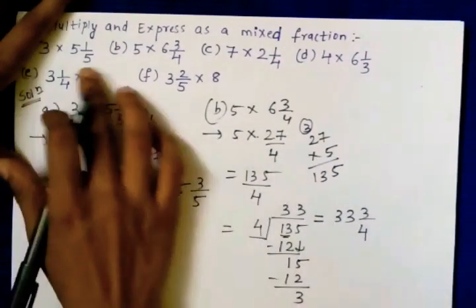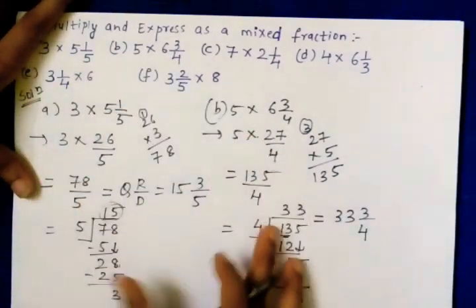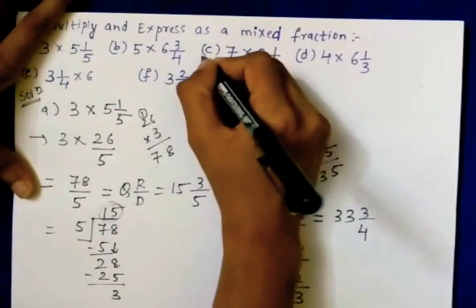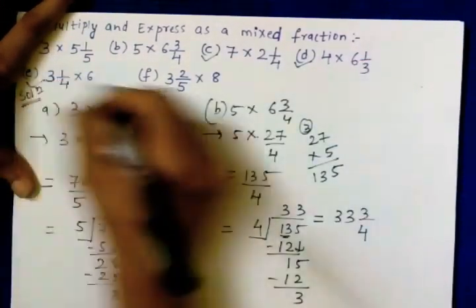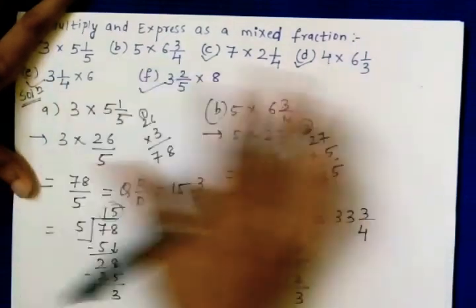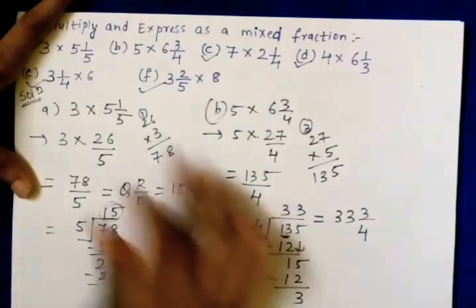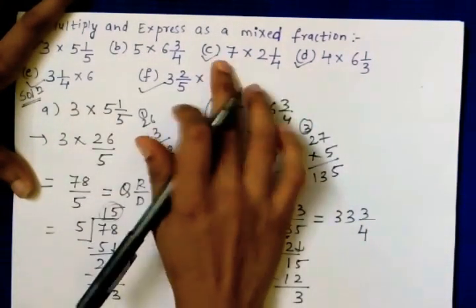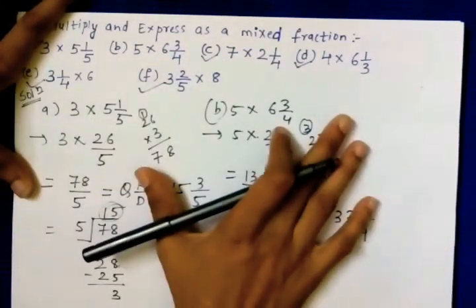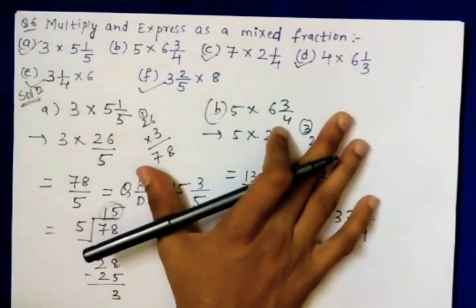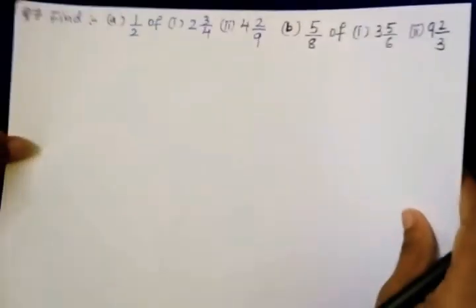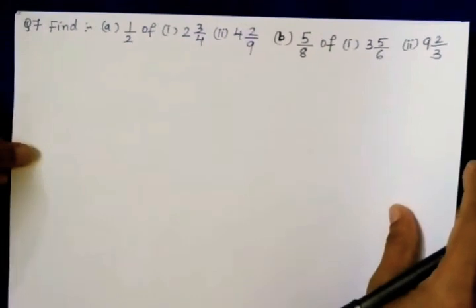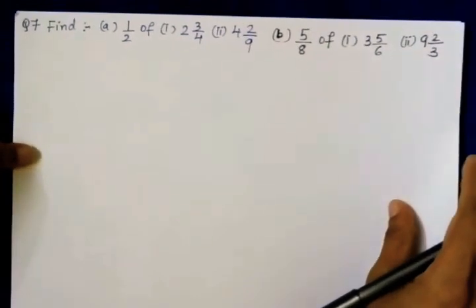Parts a and b have been shown. Parts c, d, e, and f are of the same type — you people will try yourself. That was question 6.